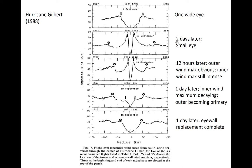Over the course of about two days, the eyewall had contracted. The radius of maximum wind had shrunk to less than 15 kilometers, and the maximum wind was nearly 80 meters per second in the eyewall. A hint of an outer wind maximum, denoted by the letter O on either side of the center, had become apparent about 100 kilometers away from the center on either side.